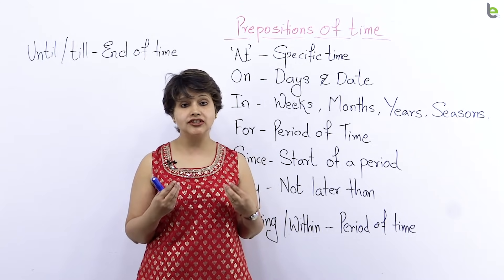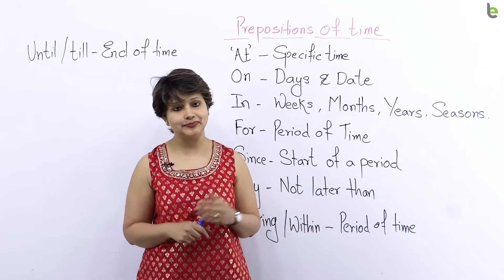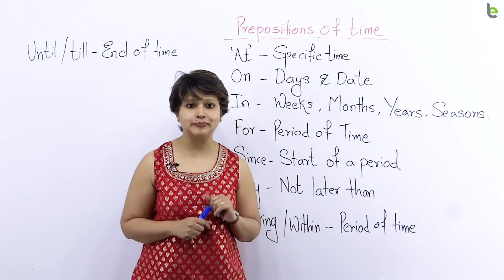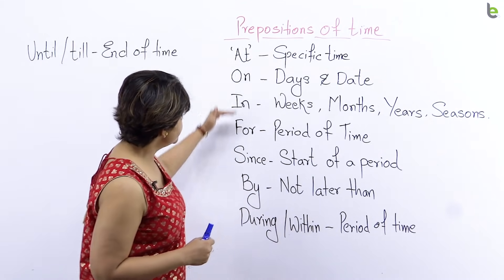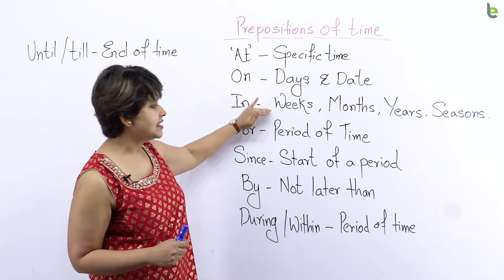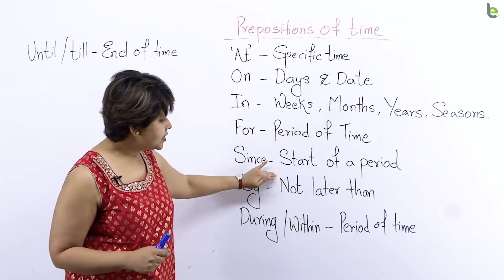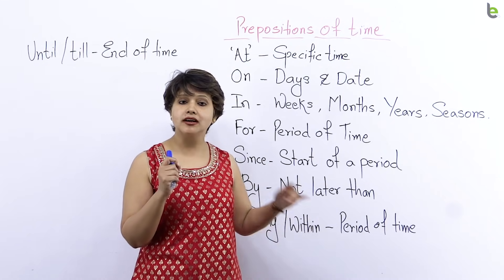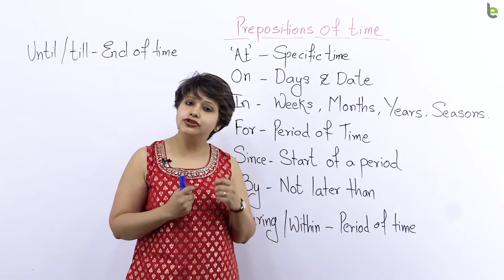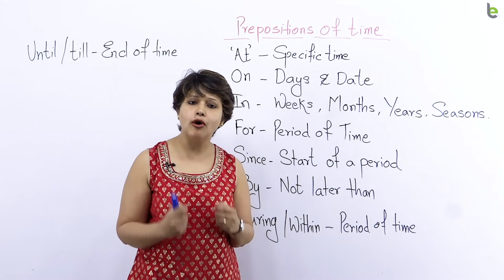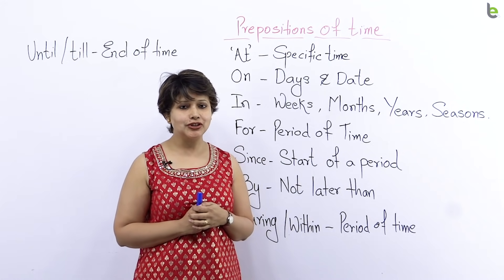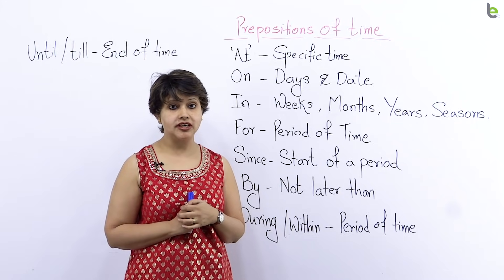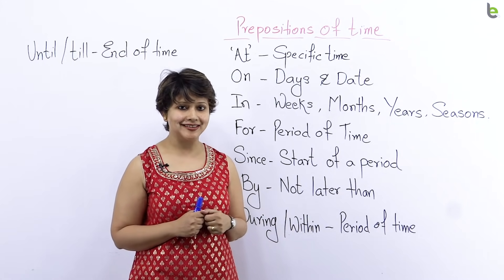Kaunse jaga par gaye? Kaunsi cheez kaunse samayi par ghaddi? Toh chaliye, aaj aise prepositions dekhte hain that tell us about time. In prepositions ki paas maine kuch key words likhe hai. Yee key words will be the key for you — agar aap samajh jayain, toh ye prepositions ko istimal karne mein bohot aasan hogi. Toh chaliye, har ek preposition ko dekhte hain, unke key words ko samajhte hain, aur unko vaakyon mein istimal karte hain.